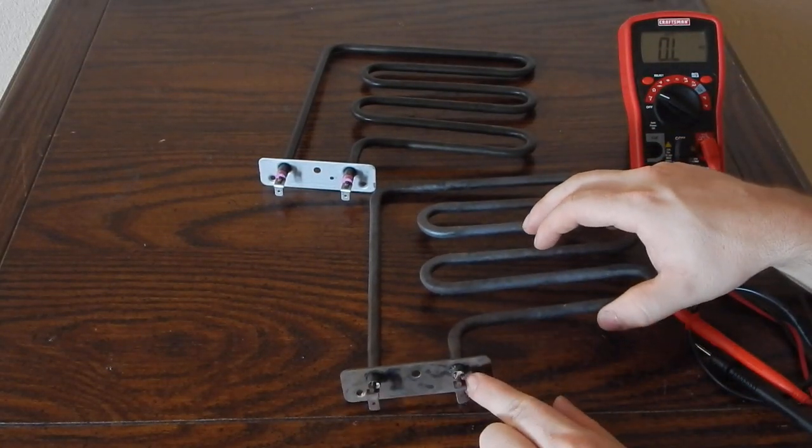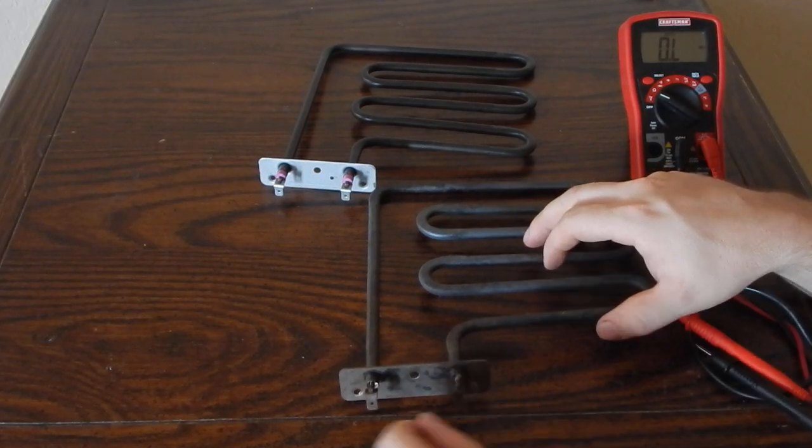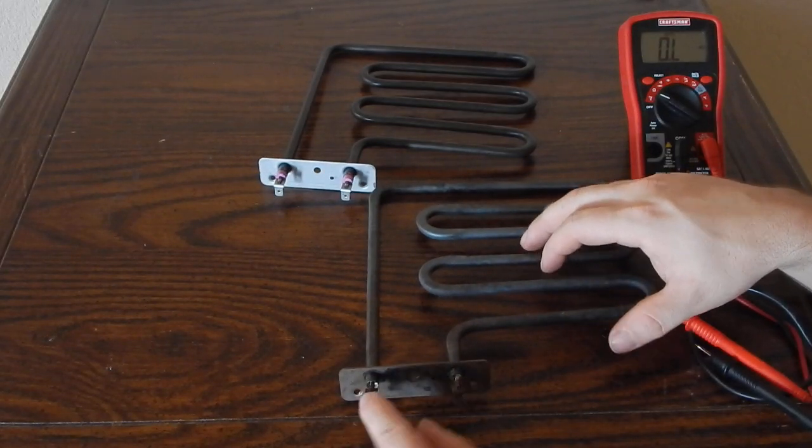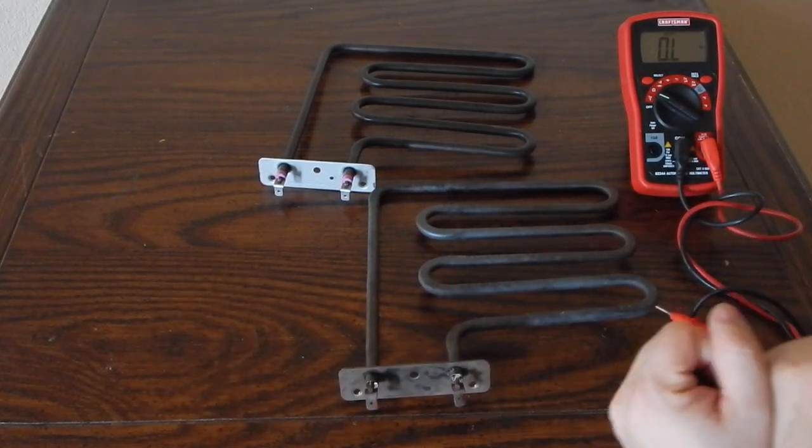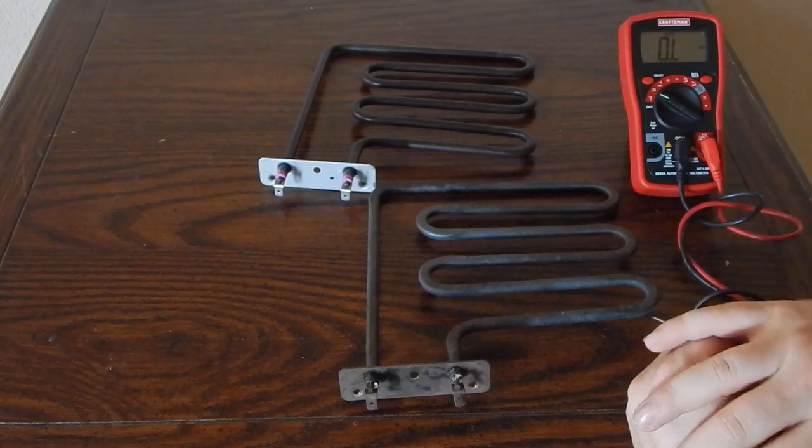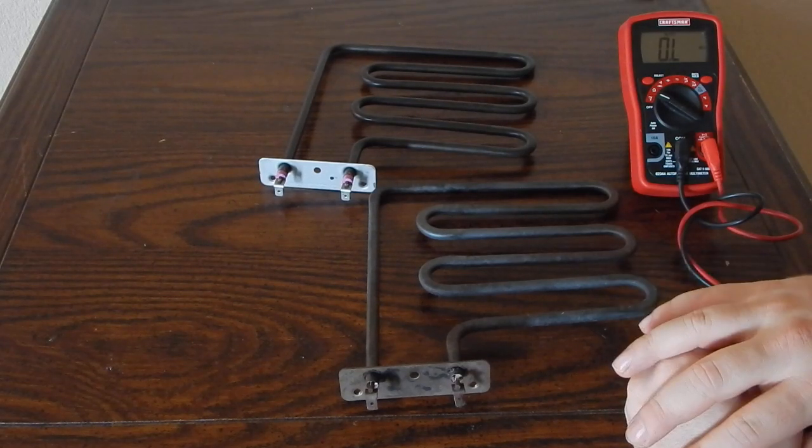If that ceramic breaks down, then you could potentially have a connection between the internal wire and the outside casing, which is obviously bad. That's what happened here and the GFI breaker caught it and shut it off.